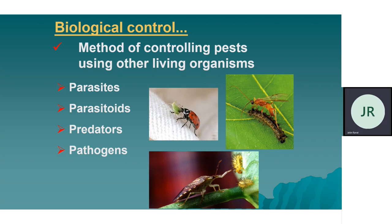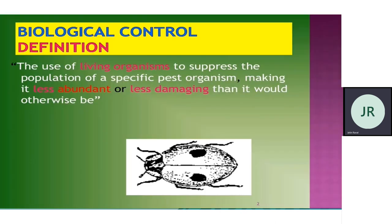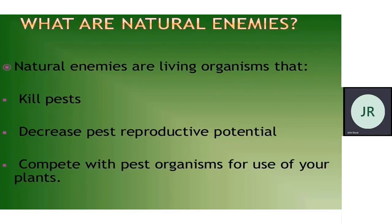Biological control is a method of controlling pests using other living organisms — it may be parasites, parasitoids, predators, or pathogens. The definition: the use of living organisms to suppress the population of a specific pest organism, making it less abundant or less damaging than it would otherwise be. Natural enemies are living organisms that kill pests or decrease pest reproductive potential — by any means by which we can decrease their reproductive potential, we can control their numbers.